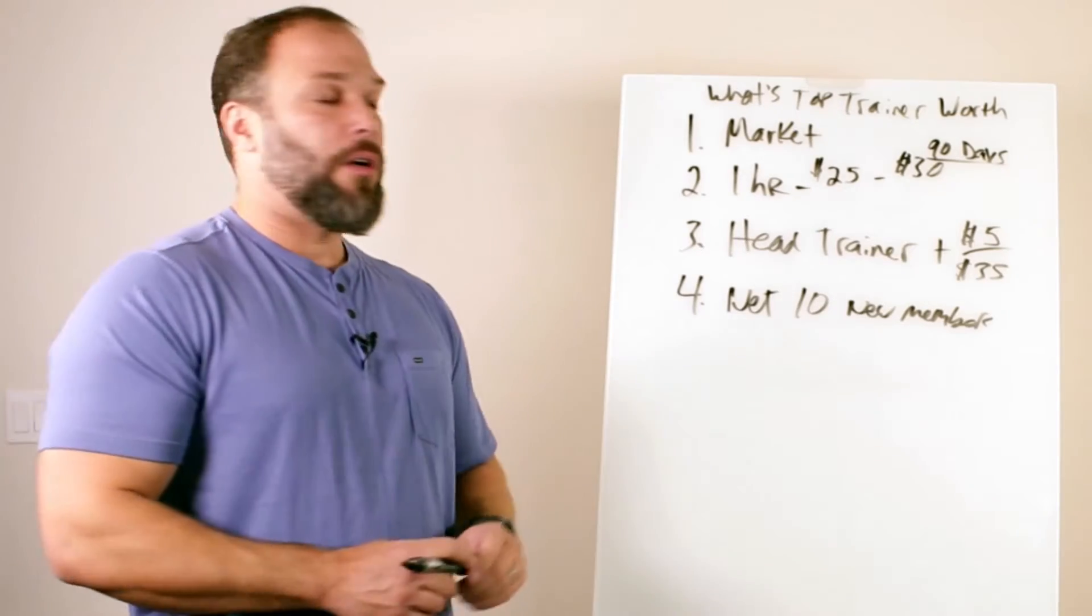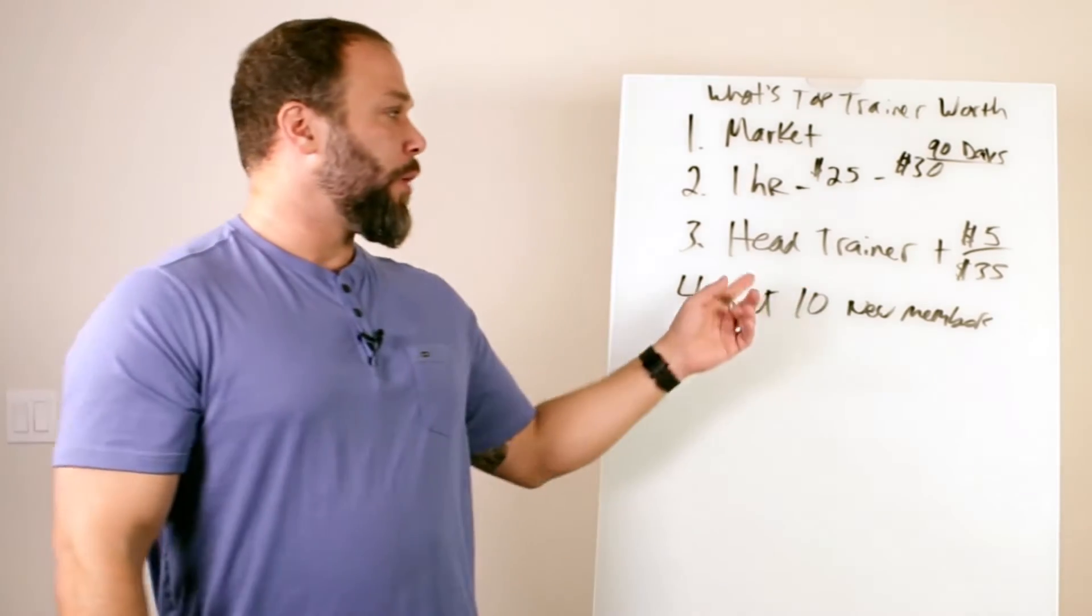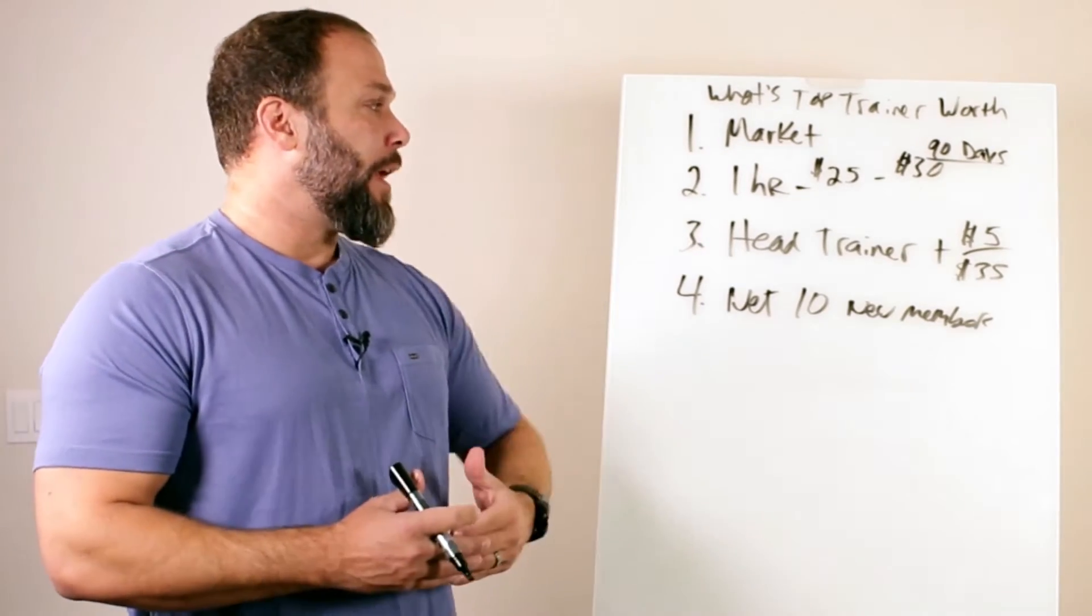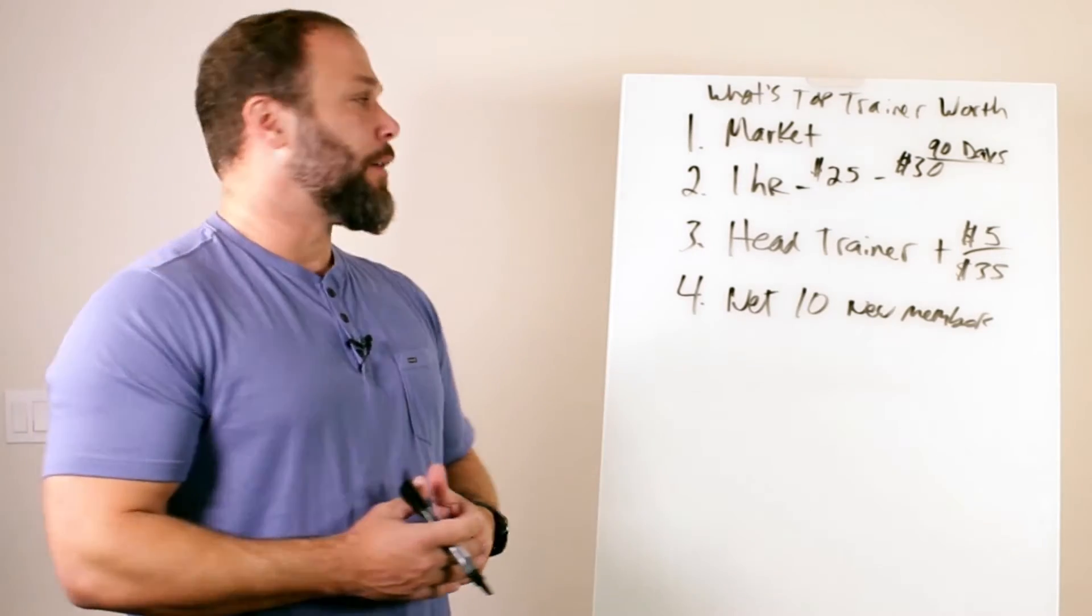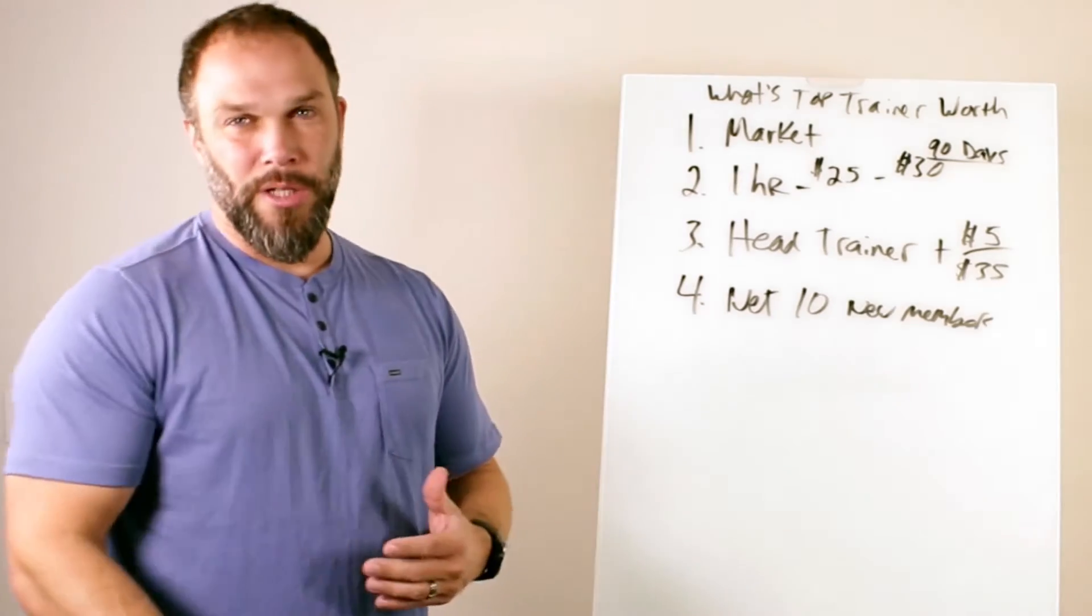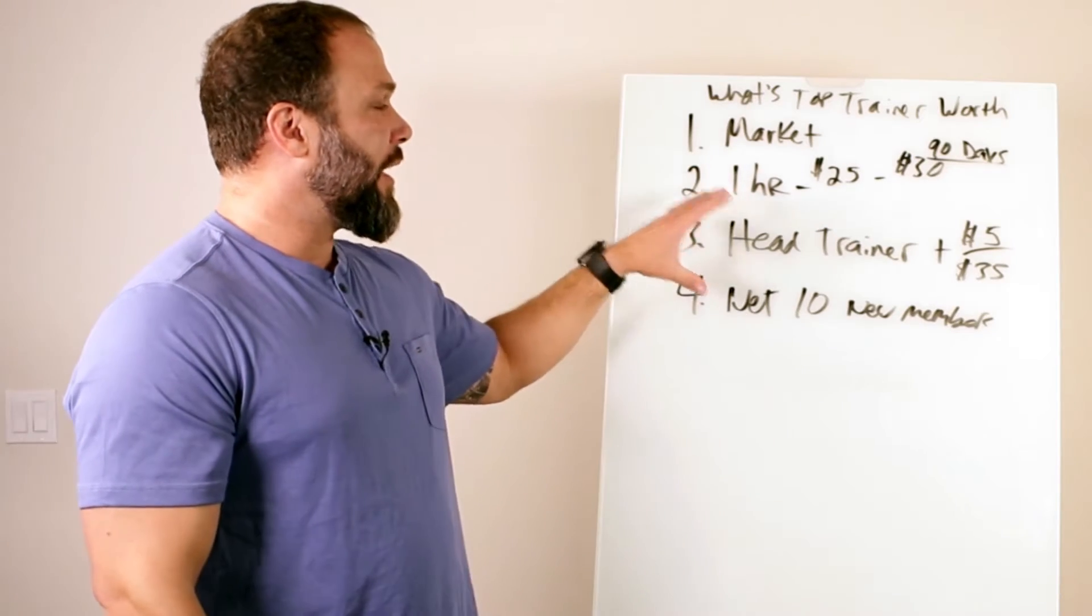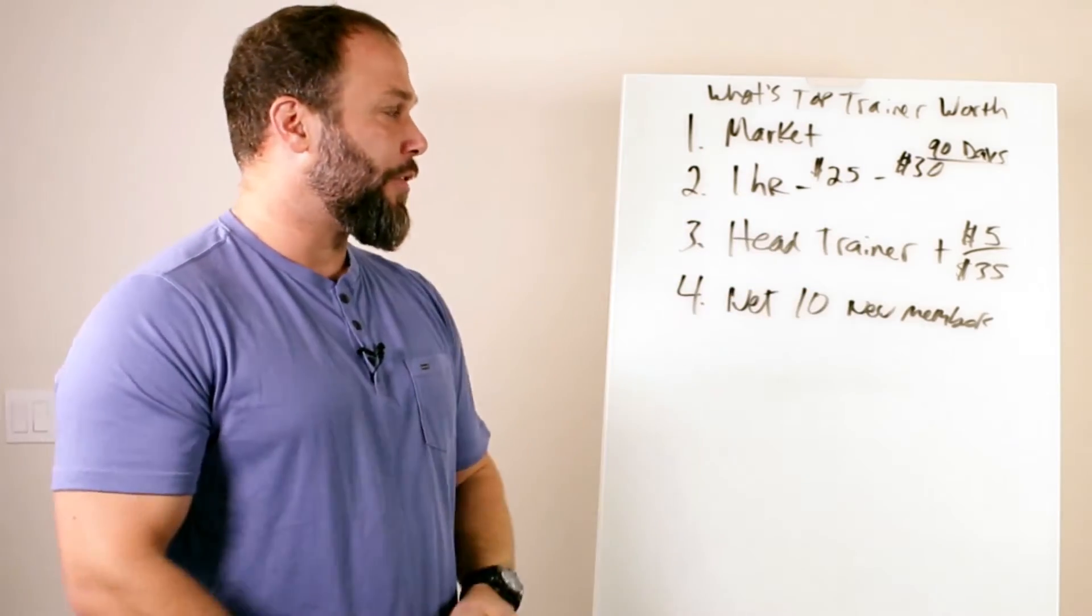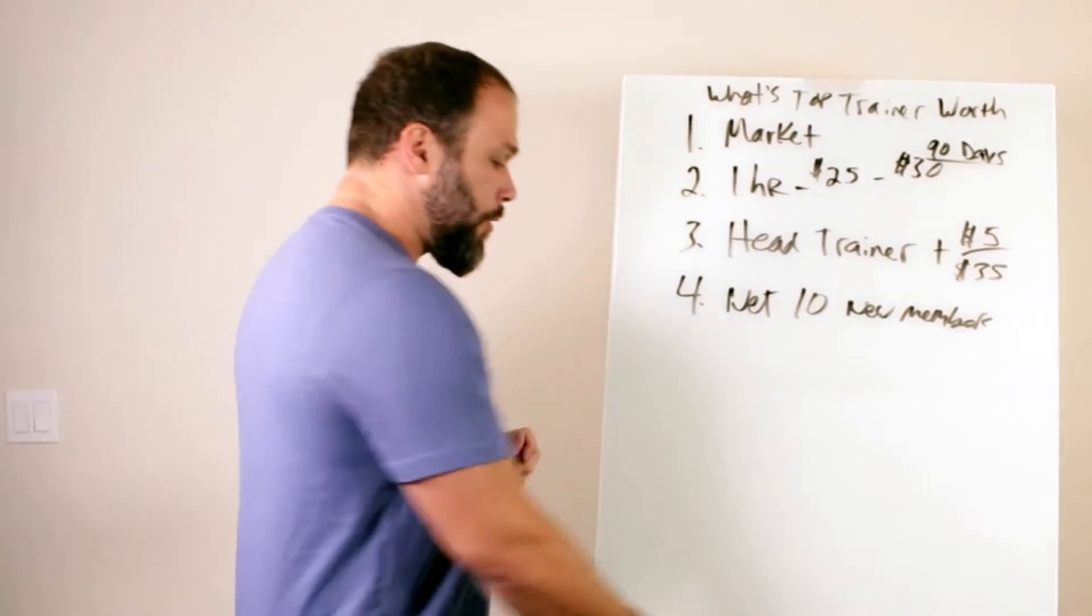And you just want to be careful when you start structuring your pay with trainers with a percentage of EFT and stuff like that because eventually you're going to start resenting having to pay them more and more money as you grow your business when they're not really contributing to the actual growth. I mean, they're helping with retention and keeping the members happy and stuff like that, which is great. And that's why we reward them when we hit our minimum of net of 10 new members. Now, our sales manager, we will pay on percentage base but not the trainer. I did that at one point and got to a point where when they were making an extra $300, $400, $500 a month based off of the EFT, then I could see that they started to get complacent. And I had to really start pushing them to keep the same level of training, of interaction with the clients, of staying after and talking to people. So that's basically it. Don't overthink it. Keep it really simple. Keep your pay structure simple.